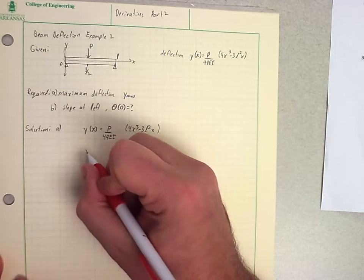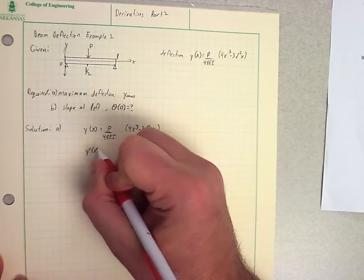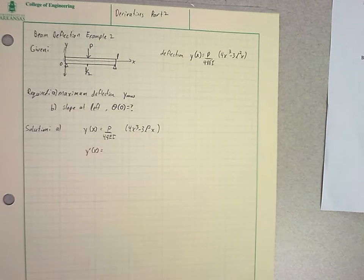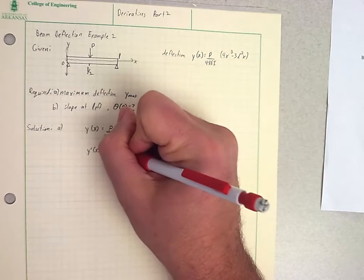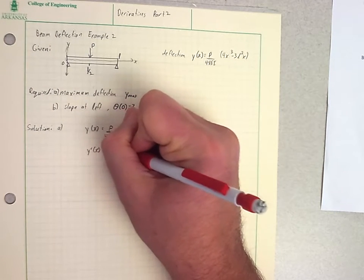So we define Y prime, or the derivative of X, which we also know from our previous step is going to be theta of X.